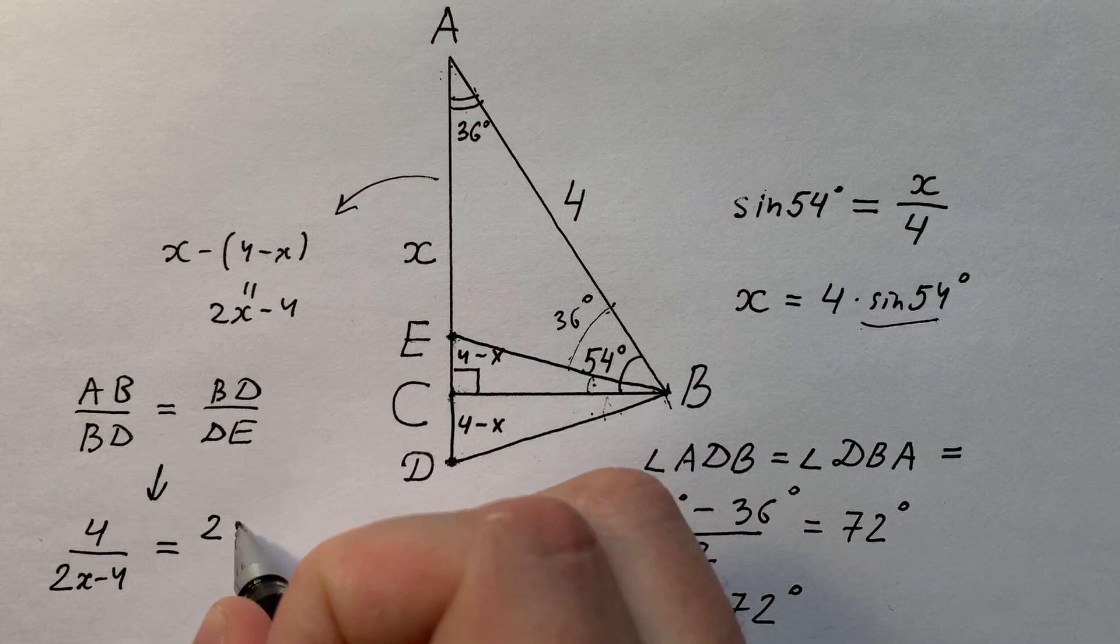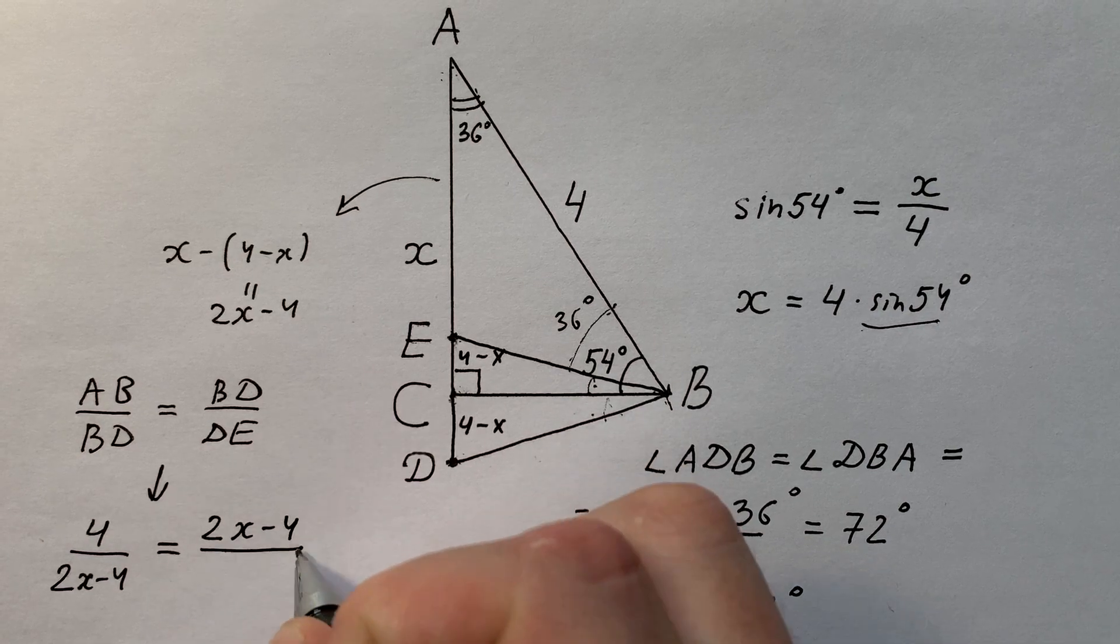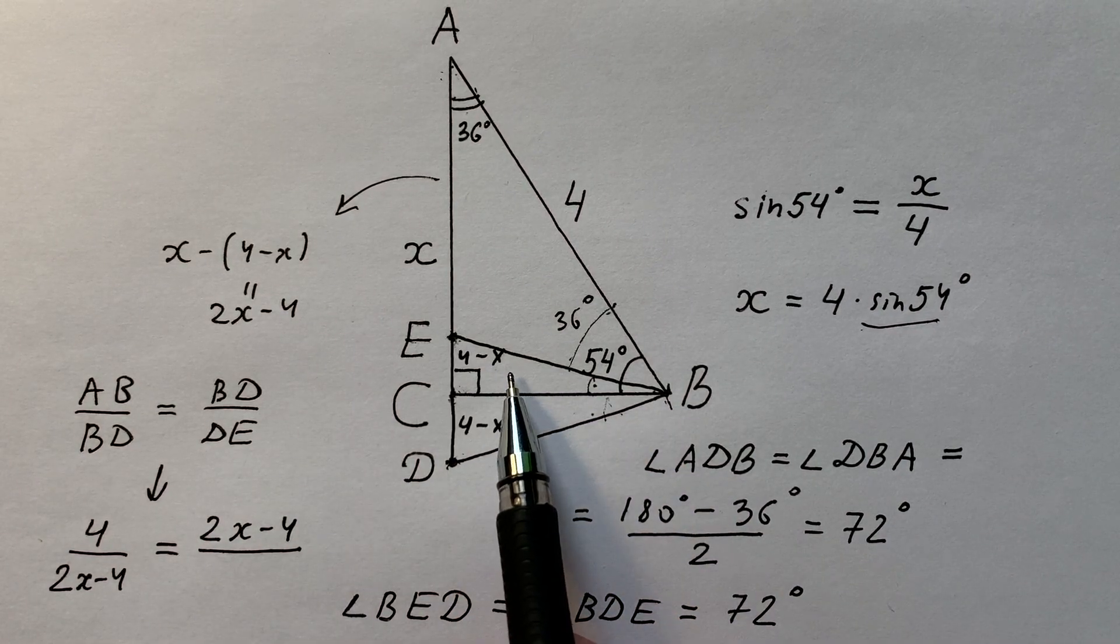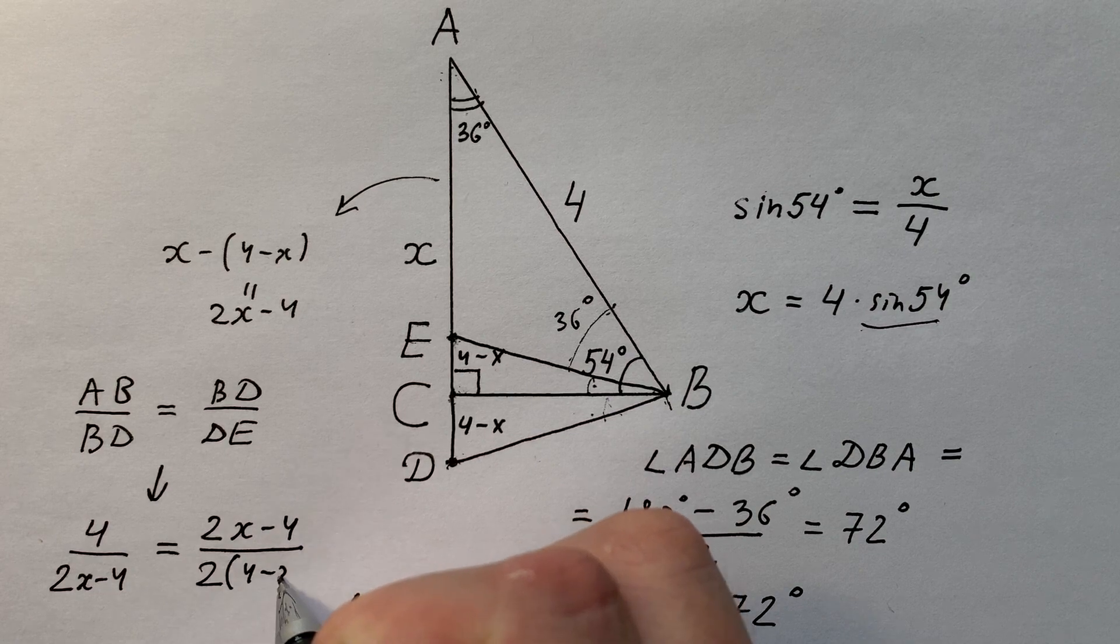Divided by 2x minus 4, it equals BD divided by DE, which is (4 minus x) times 2, or 2 times (4 minus x).